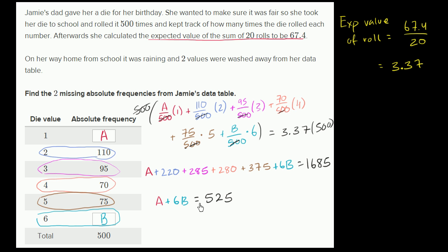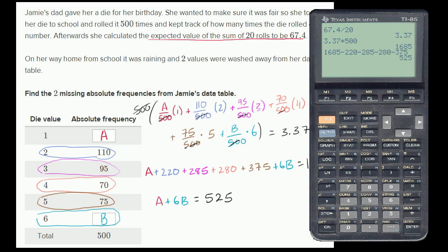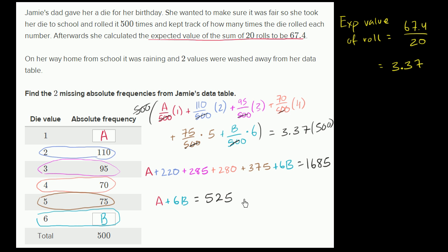And you say, okay, you did all that work, but we still have one equation with two unknowns. How do we figure out what A and B, how do we figure out what A and B actually are? Well, we know something else. We know, and this was actually much easier to figure out, we know that the sum of this whole table right over here, A plus 110 plus 95 plus 70 plus 75 plus B, is equal to 500.